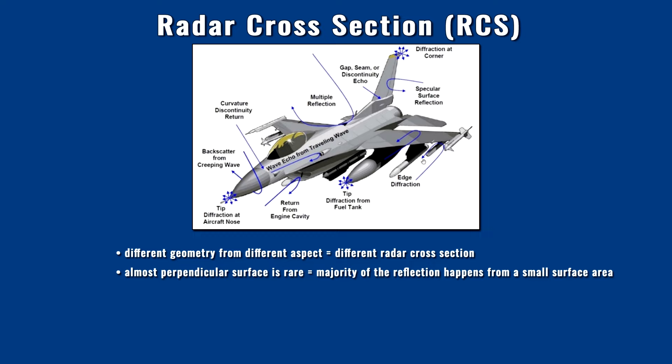What does this mean? A relatively small part of an aircraft can be responsible for a significant part of the reflection in given directions. Because of this, the radar cross-section is highly aspect dependent and it is not a single value thing. It has characteristics. Characterizing the radar cross-section with a single value for an airplane has a strong reality-distorting effect, since it always applies only to a specific direction and means only an average value with fluctuations.